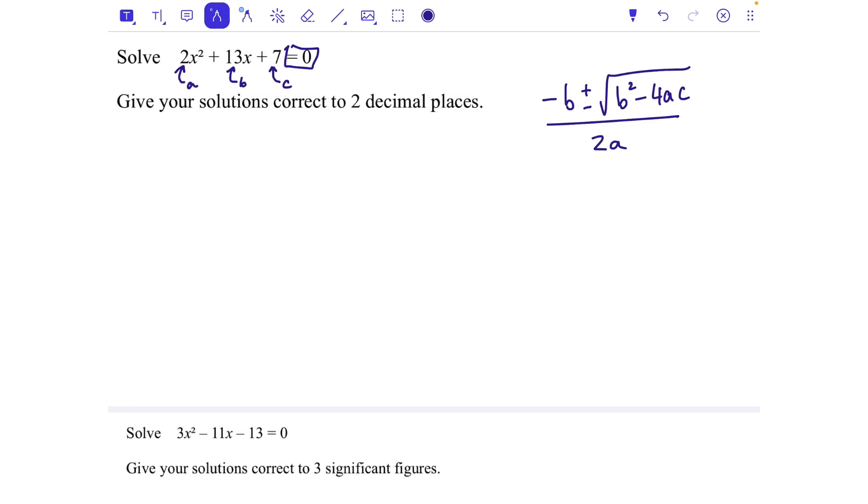It must equal zero in order to do it. If it doesn't equal zero then you need to just move everything onto the left hand side or the right hand side of the equation so everything's on the same side. So in this case a equals 2, b equals 13, and c equals 7, and they're all positive.